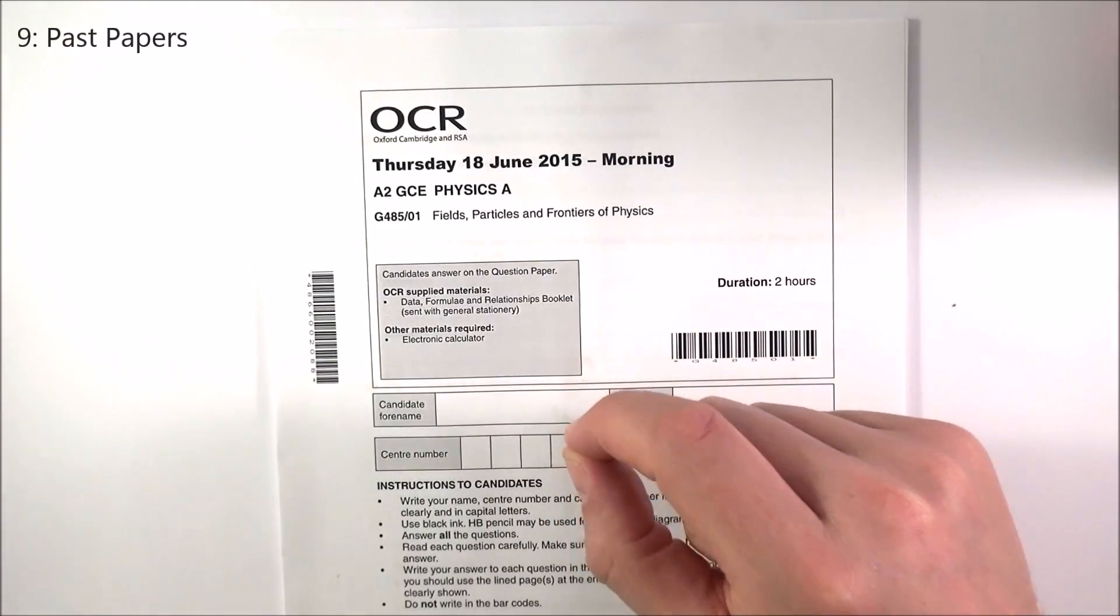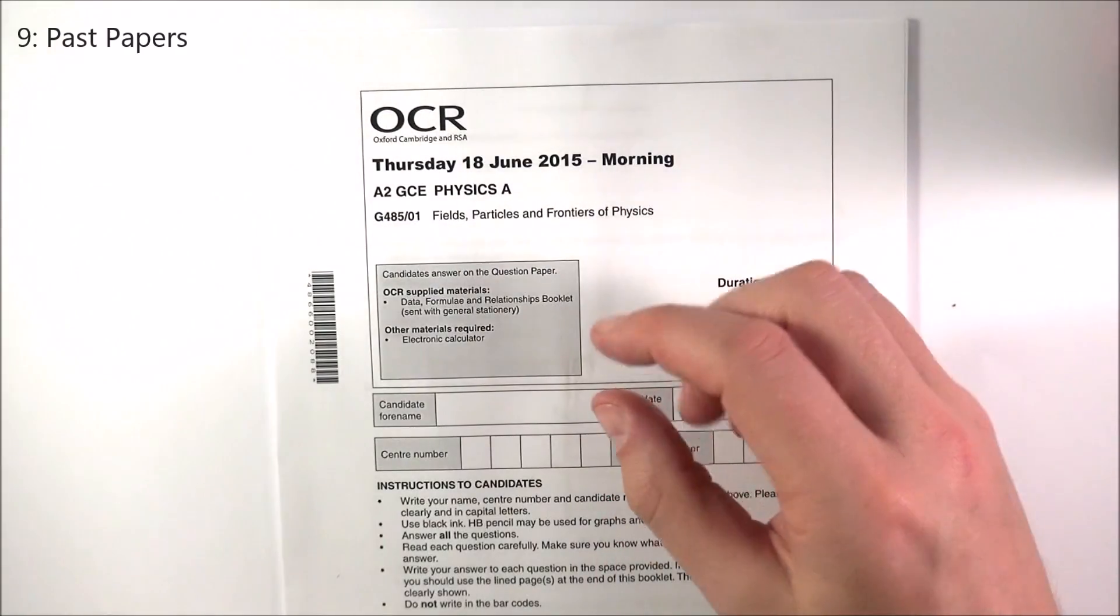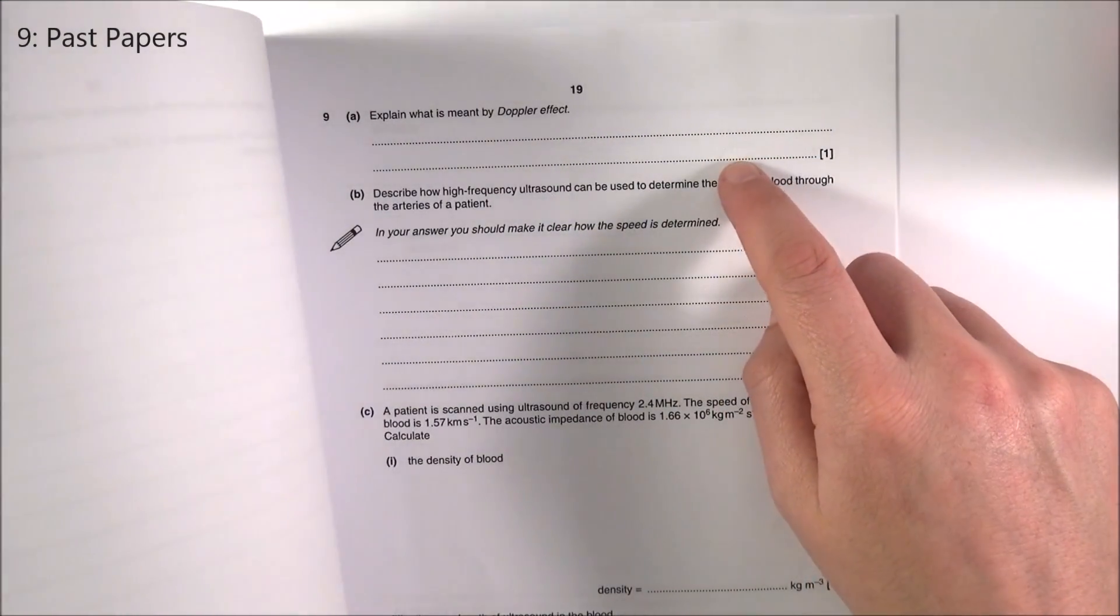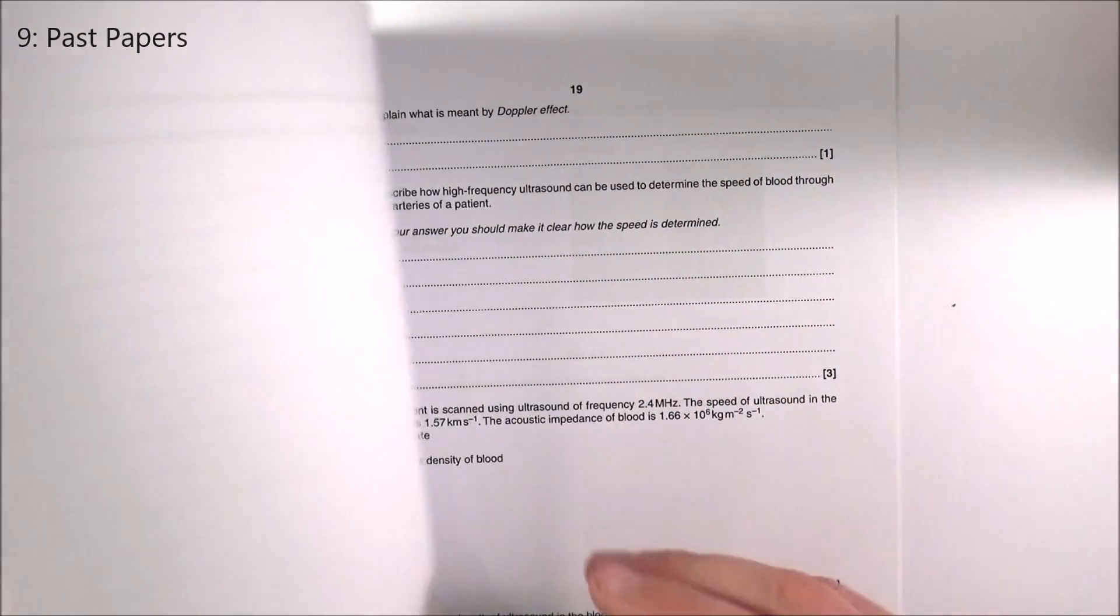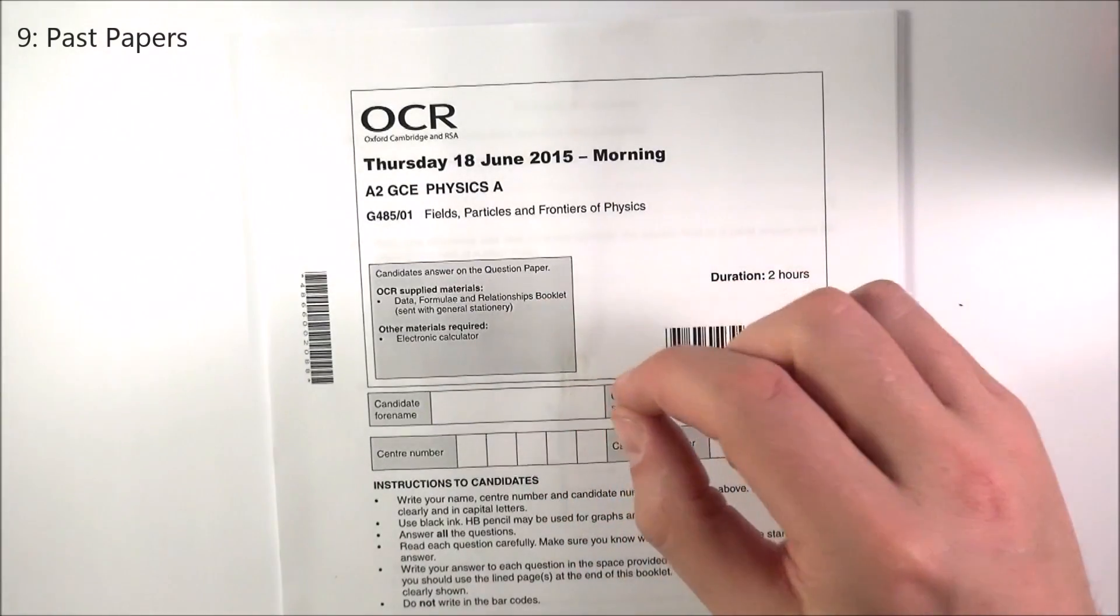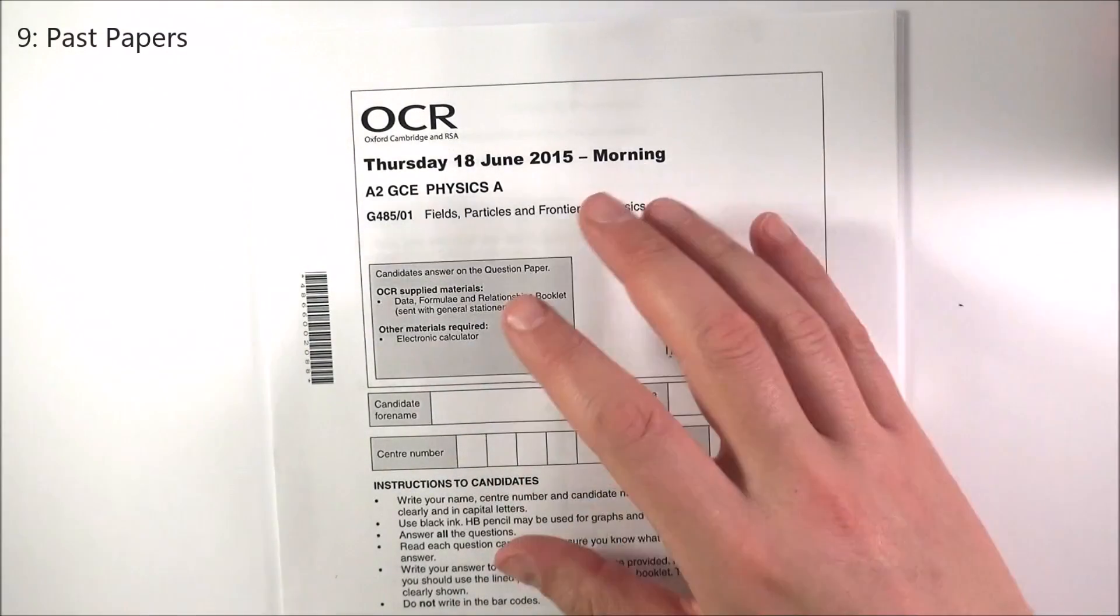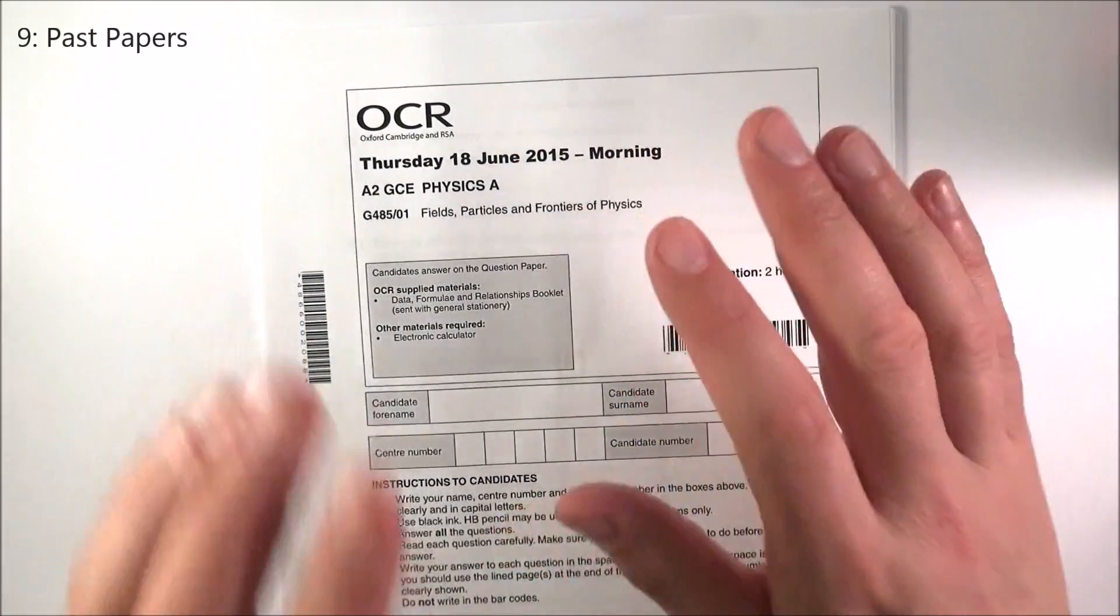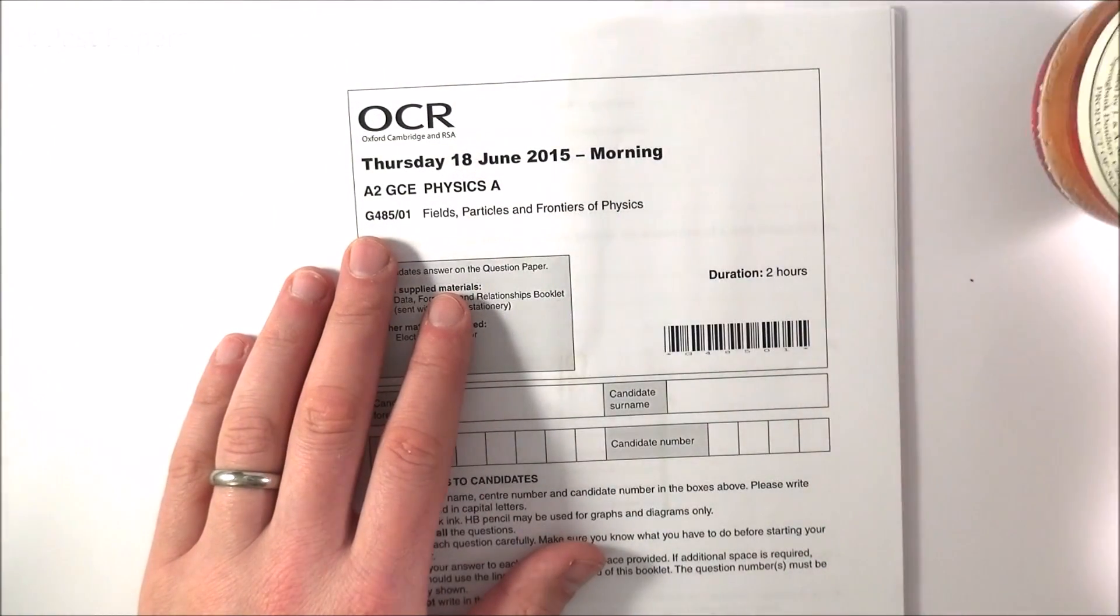When you do them, do them under exam conditions. Don't look for help in your book. Get rid of distractions like your mobile phone and really time yourself. If it's a one mark question, that's one minute. Three marks, three minutes. If you don't get it done, move on. The past papers, there's links beneath the video, but this is the thing you need to save for special and that will give you the best indication of how you're getting on. Don't waste it just like you don't waste the finest drinks during the middle of the week.